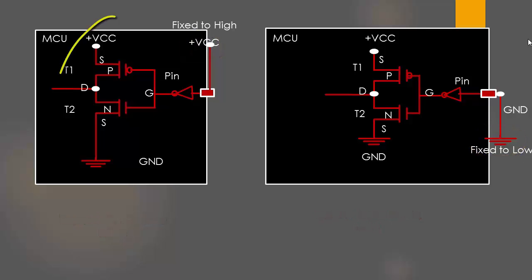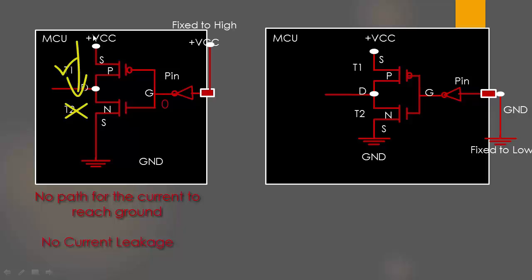And this is our input buffer circuitry inside the MCU. When the pin is driven to high voltage at this point it's low due to the inverter. As a result of that T1 is on and T2 is off. Hence there is no path for the current to reach the ground. So in this case leakage will not happen since the current never leaks out from VCC to the ground.